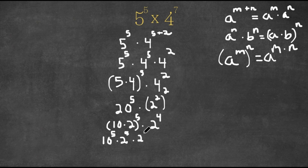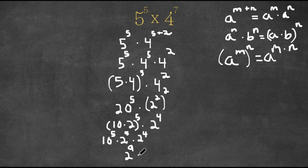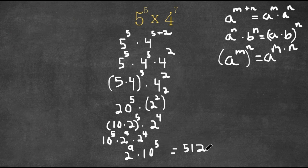And we're still multiplying this with 2 to the power of 4. Now remember this property: when we're multiplying two exponents with the same base we add the exponents. So 2 to the power of 5 times 2 to the power of 4 is 2 to the power of 9, times 10 to the power of 5. Now 2 to the power of 9 is equal to 512, and we're going to add five zeros to 512.